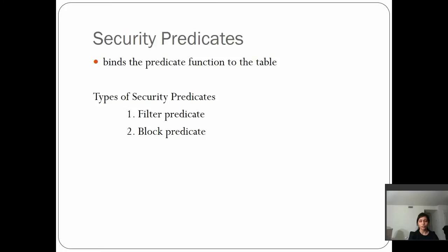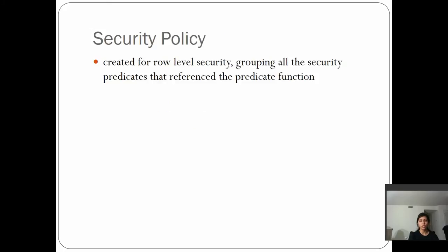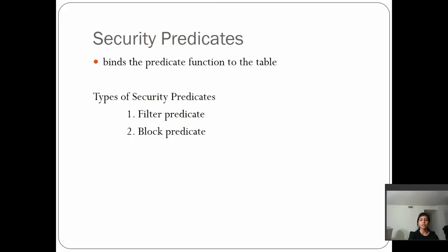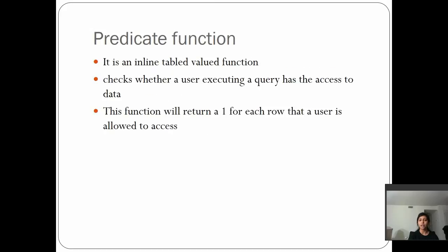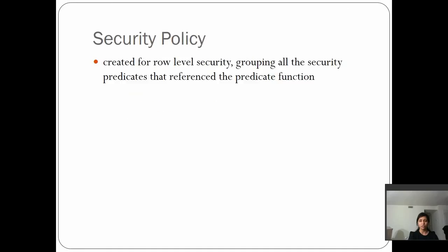There are two types of security predicates in SQL Server: the filter predicate and the block predicate. We'll talk about these in more detail once we get into the demo. Once you identify the security predicates, you create a security policy by binding the security predicates and the predicate function created in the first two steps. Let's go into the demo now.